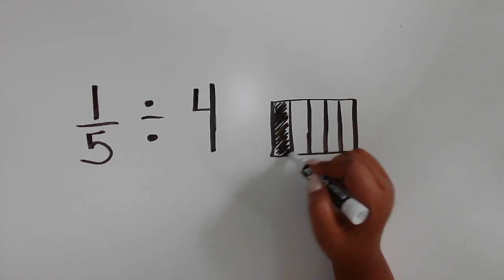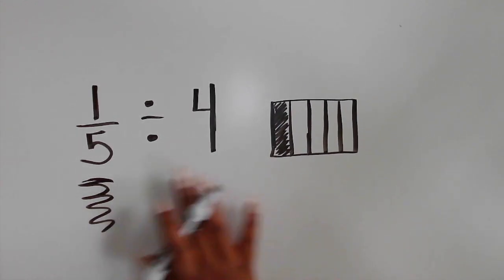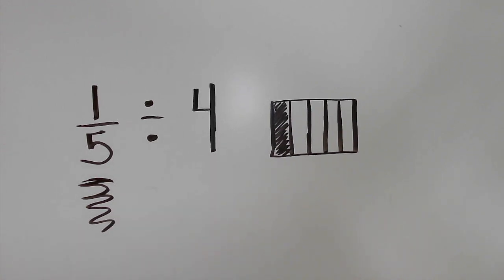Now that 1 fifth is shown in the whole, partition it into four equal parts since the expression shows to divide by 4.